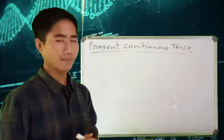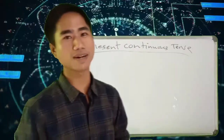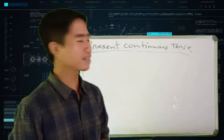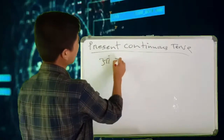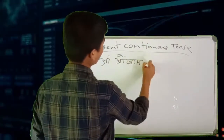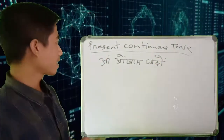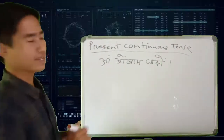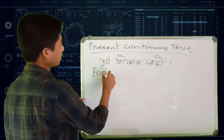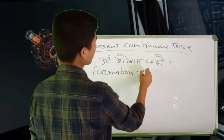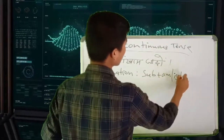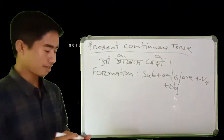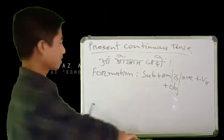The first thing we have done is Present Continuous Tense. Present continuous tense is the present continuous tense — we can say present continuous tense. This is the present continuous tense, and the subject is the present continuous tense.